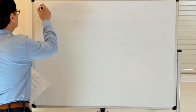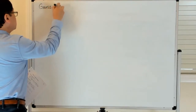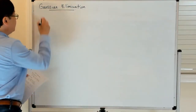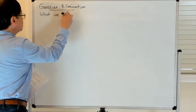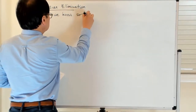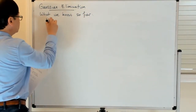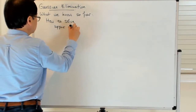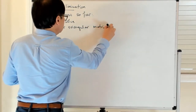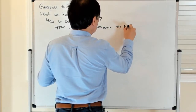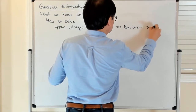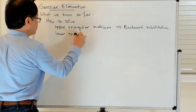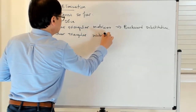Alright, so now we're going to talk about Gaussian elimination. Let me recall what we've done so far. We know how to solve upper triangular matrices using back substitution, and we also know how to do this for lower triangular matrices using forward substitution.